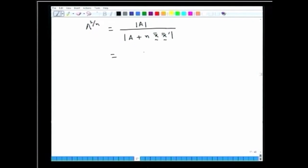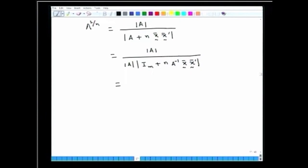We can take the determinant of A outside from the denominator to get the form: determinant of A times the determinant of Iₘ plus n times A⁻¹ x̄x̄ transpose. So this term equals 1 divided by the determinant of Iₘ plus n times A⁻¹ x̄x̄ transpose.